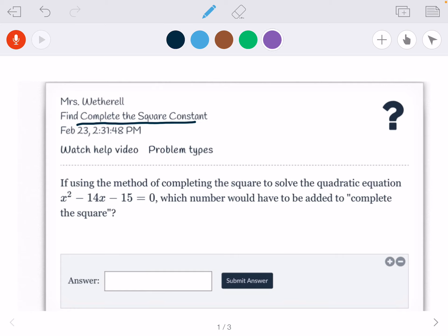You're going to see these words. I don't want you to freak out because it looks like a long word problem. It's really not hard at all. If you read it, it says: if using the method of completing the square to solve the quadratic equation x squared minus 14x minus 15 equals 0, which number would have to be added to complete the square?